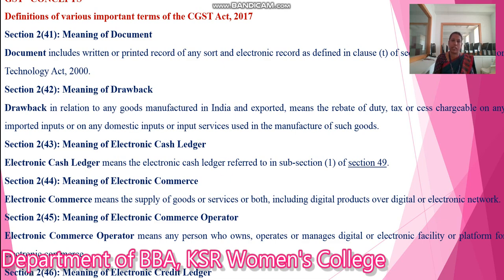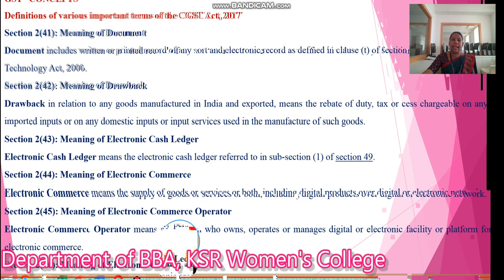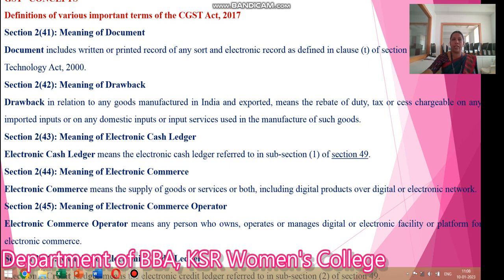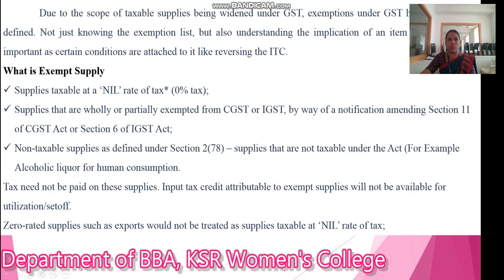Next, Section 2, subsection 45: meaning of 'electronic commerce operator.' Electronic commerce operator means any person who owns, operates, or manages digital or electronic facilities or platforms for electronic commerce. Next, Section 2, subsection 46: meaning of 'credit ledger.' Credit ledger means the electronic credit ledger referred to in Section 2, subsection 49.